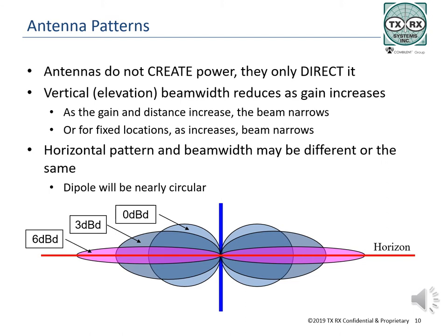Signals straight up or straight down may not be important to a system, but signal toward the horizon will be. The gain analysis shown here is also true of directional antennas. The more gain the antenna offers, the further the signal will go, but the narrower the beam becomes. A directional antenna pattern will not be as symmetrical as shown here, and even a dipole pattern will not be as perfect as illustrated. The horizontal and vertical patterns may be considerably different depending on the type and gain of the antenna.